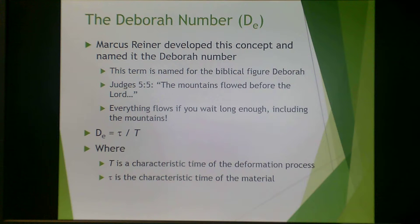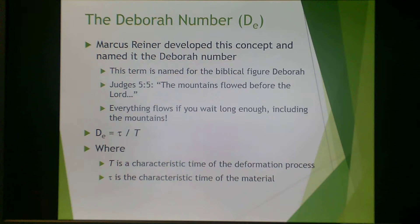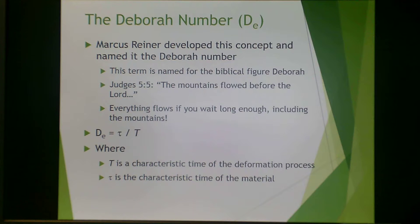The first of those parameters is the Deborah number, which was developed by Marcus Reiner. He termed it after the biblical figure Deborah — 'the mountains flowed before the Lord.' In other words, everything flows if you wait long enough, including the mountains.